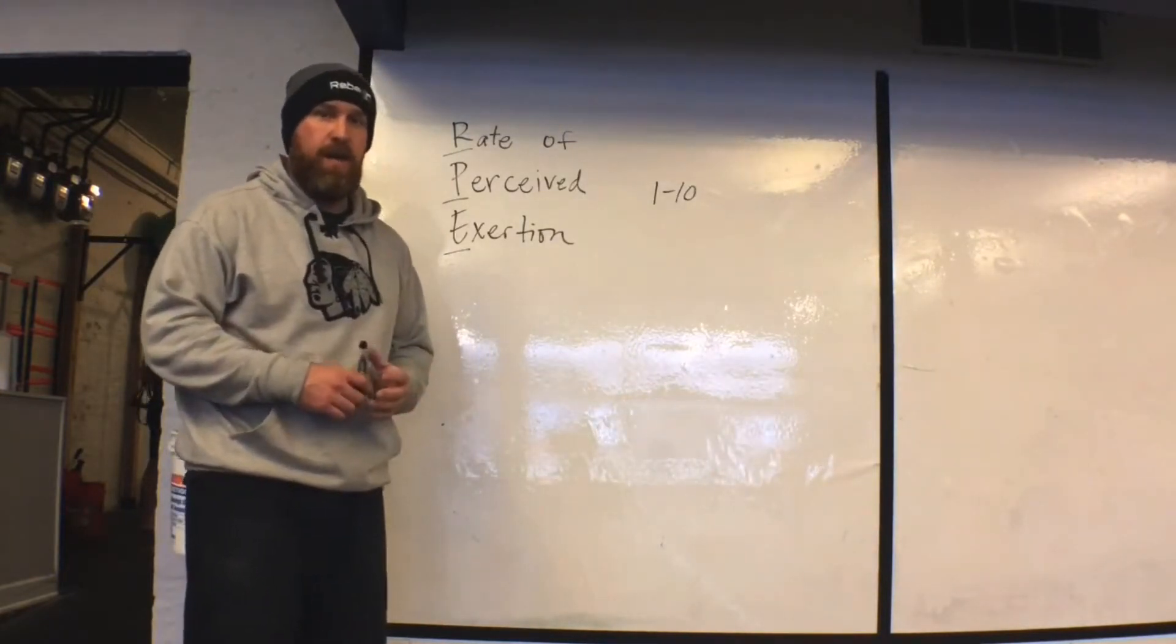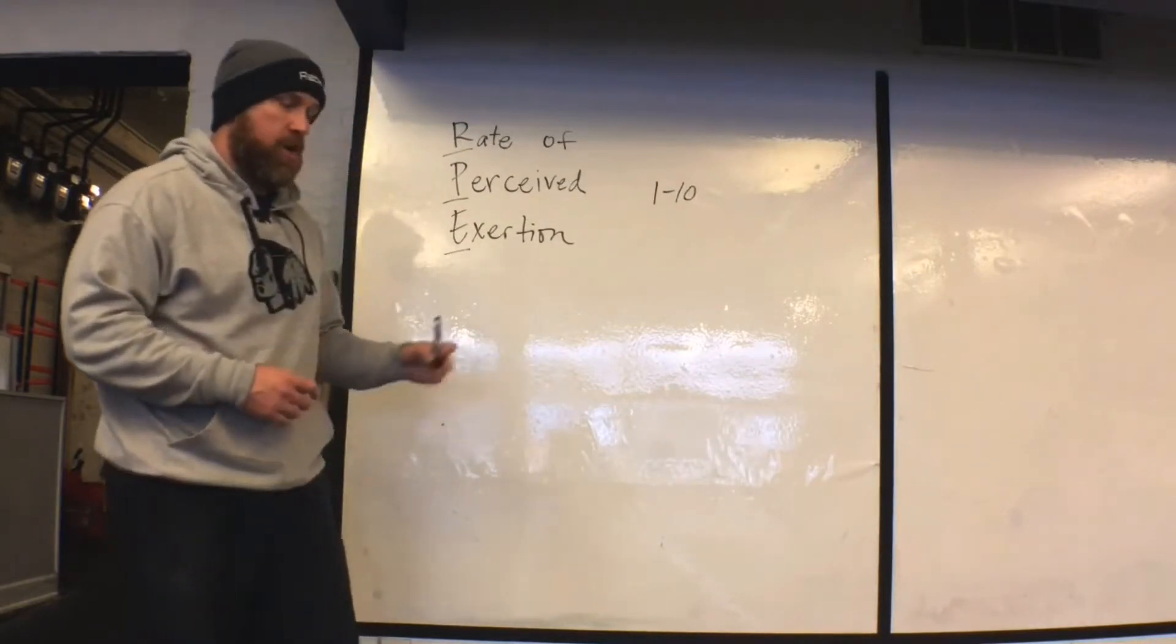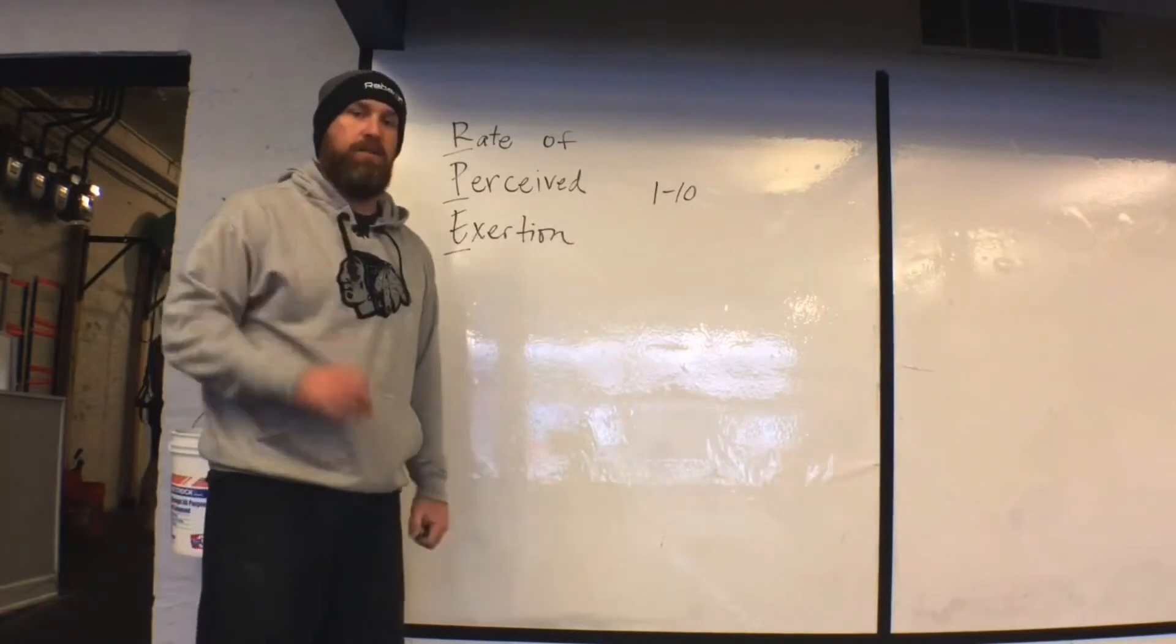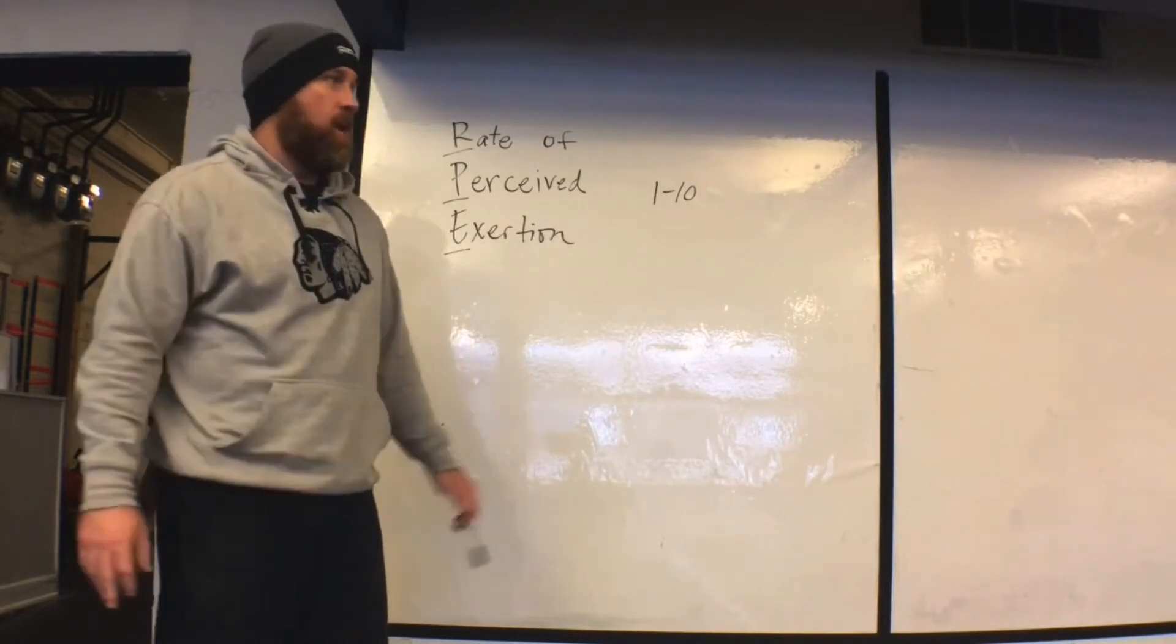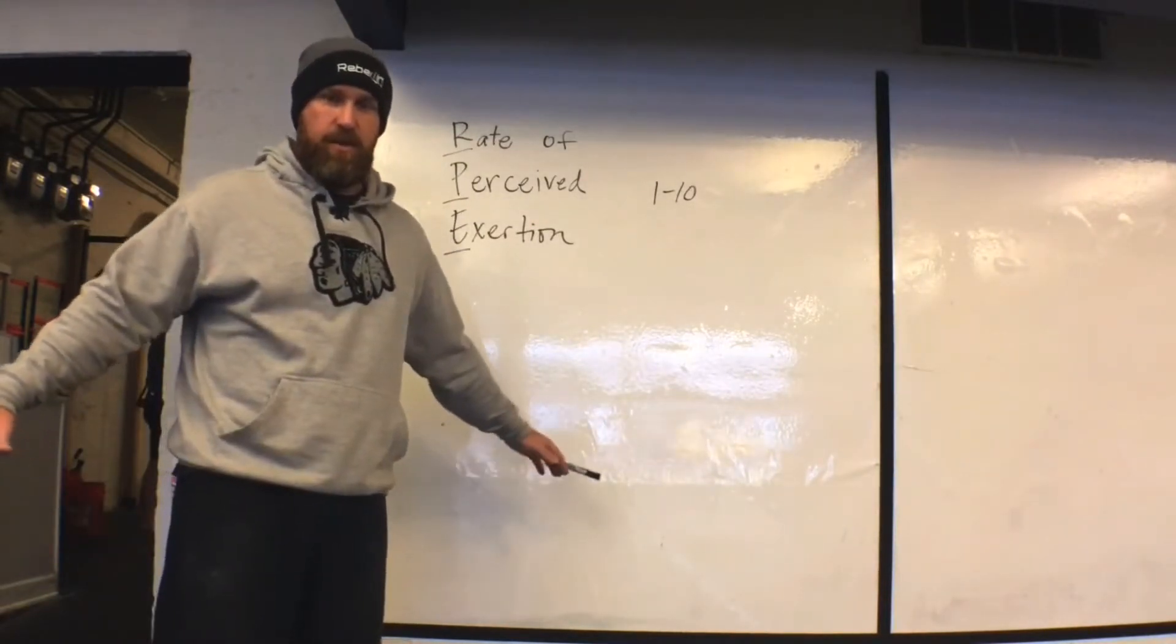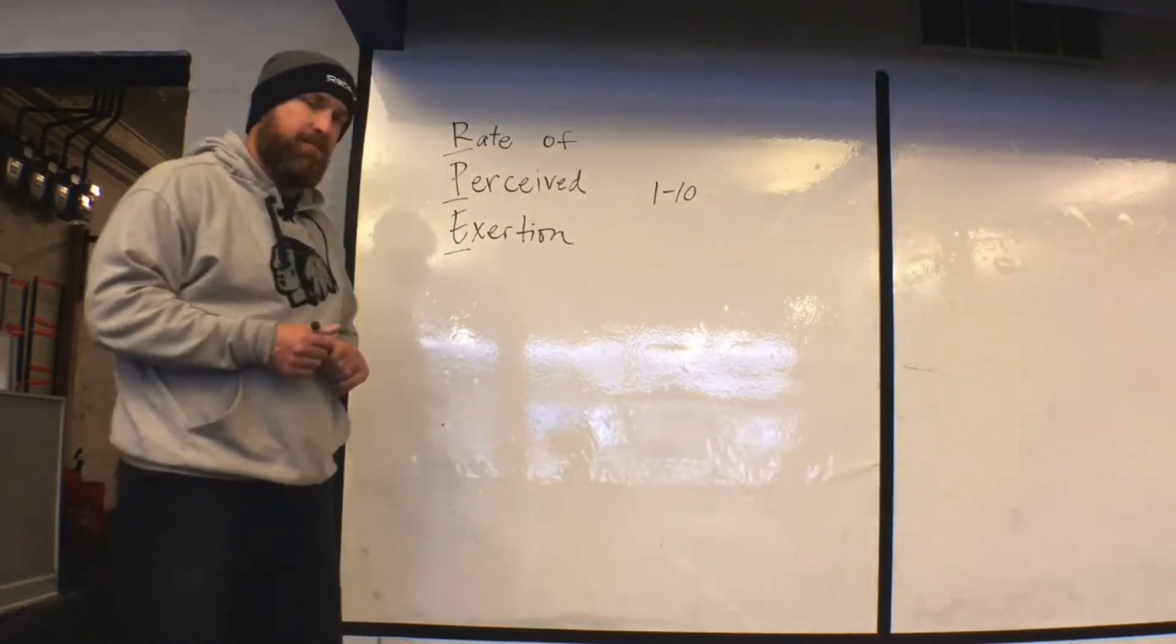We give them the autonomy to figure that out by themselves. Here's how it works: we use numbers one through ten. One being the lowest amount of exertion, way easy. Ten being you have nothing left in the tank when you're done with that set.